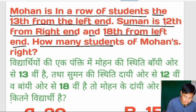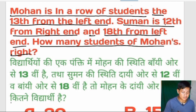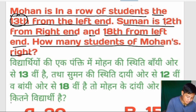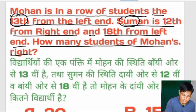How many students are to Mohon's right? The first question: Sumon is 13 from the left, Sumon is 12 from the right and 18 from the left.